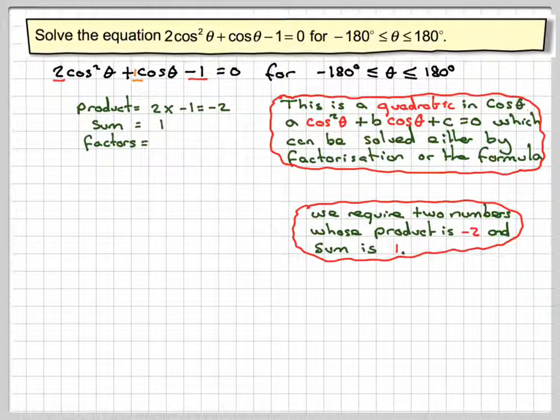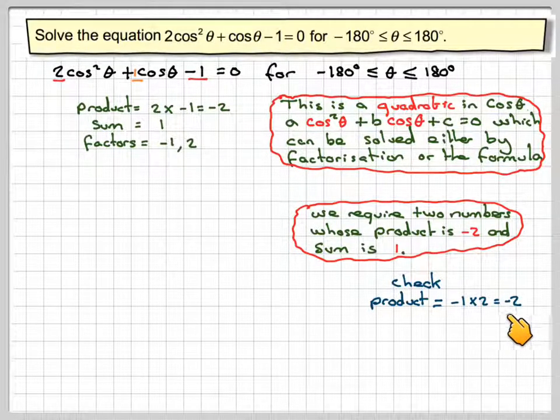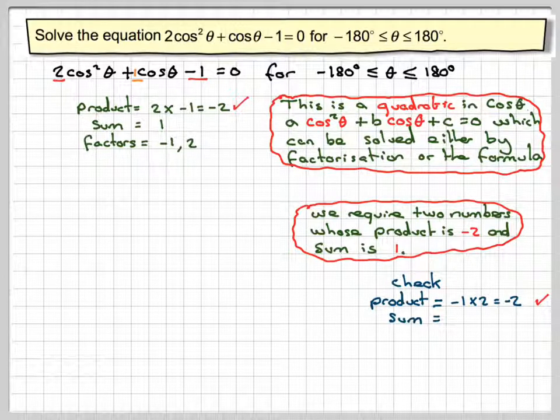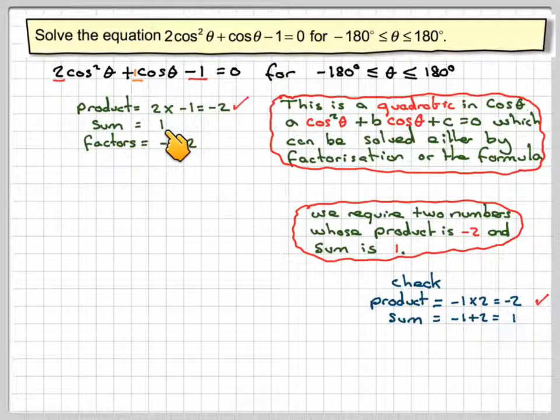With a little bit of trial and improvement you would come up with minus 1 and 2. Now you can check that because the product is minus 1 times 2 which gives me minus 2, and that's what I wanted the product to be. And the sum of these two numbers will be minus 1 plus 2 which gives me 1, and I wanted the sum to be 1. So that's OK as well. It's worth doing a little check though.